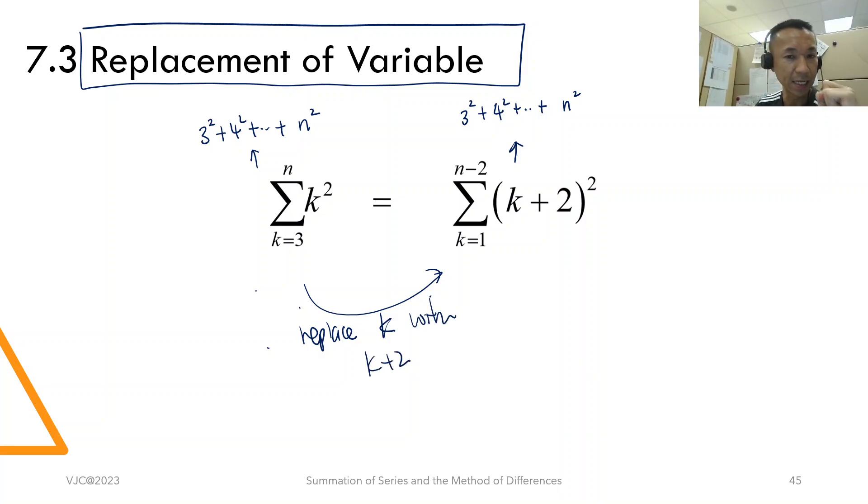Now, let me write out what it means here. It means this. I'll write the summation out. Maybe the arrow shouldn't point here. The arrow points here first. Replacing k with k plus 2.